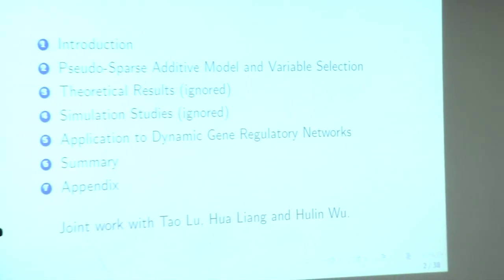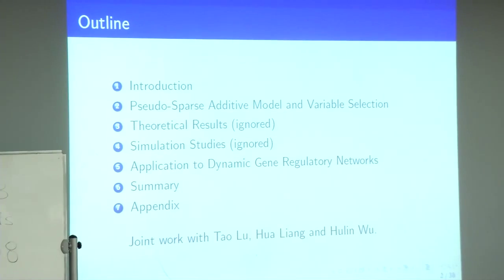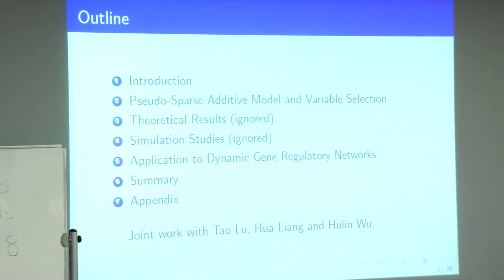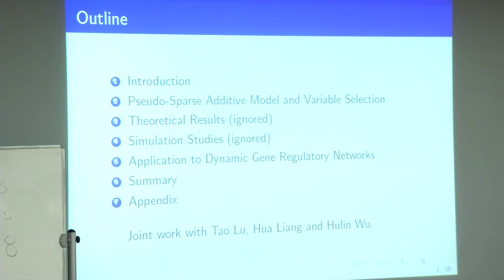This is a big picture of the outline. First I want to introduce some background — what the ODE model is and what the gene regulatory network is. Then I want to introduce our model and our selection method. For the theoretical results and simulation studies, I want to skip them because of the time limit. In the first section, I want to show the application to a dynamic gene regulatory network. Then in the second section I'll do some summary and show some future research plans. Finally, I want to introduce some thoughts and experiences from my last several years.